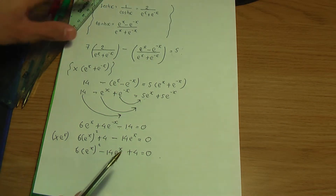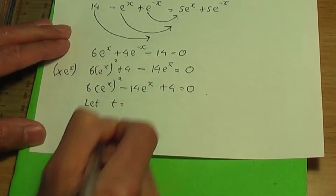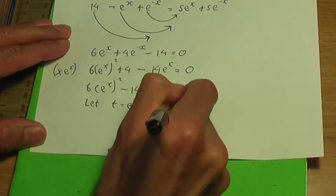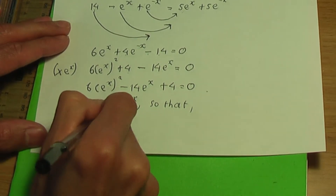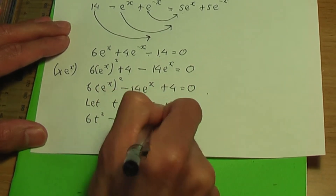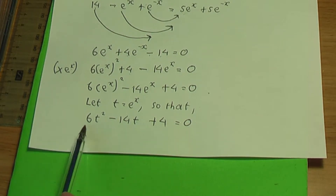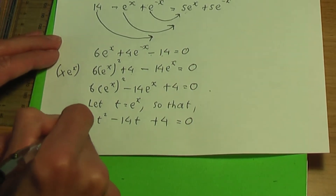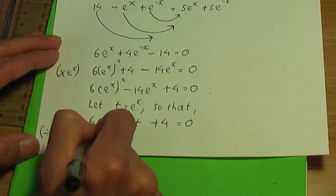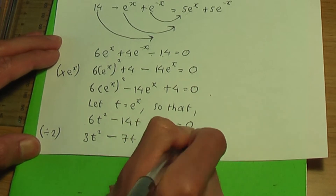We have a quadratic equation involving an exponential function. Using the substitution t = e^x, we get 6t² minus 14t plus 4 equals 0. Dividing every term by 2 reduces this to 3t² minus 7t plus 2 equals 0.